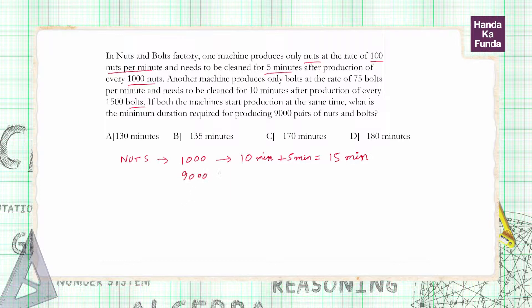So if 1000 nuts take 15 minutes, 9000 nuts will take 135 minutes. If you think it is 135 minutes, you are making a mistake. Think about that mistake - it is a very common mistake that people make.